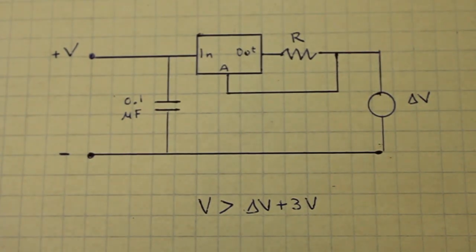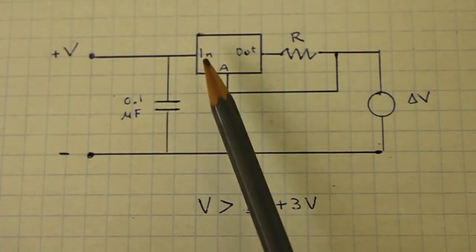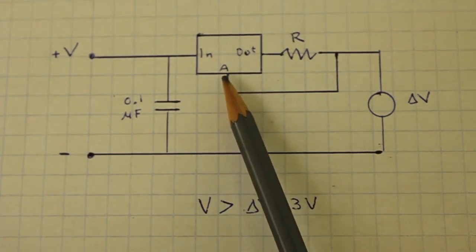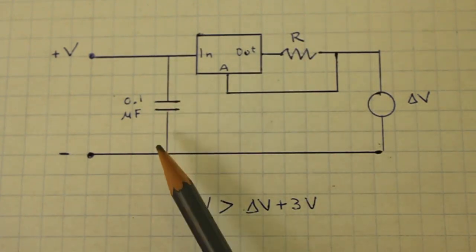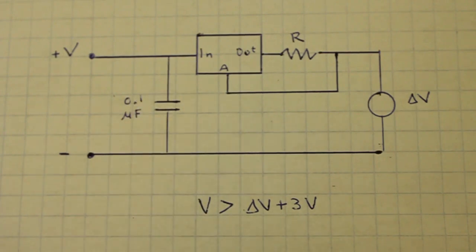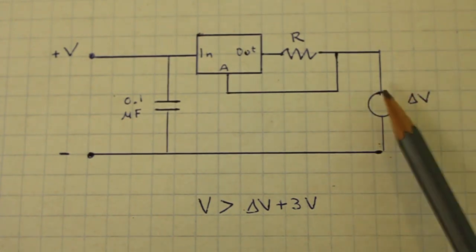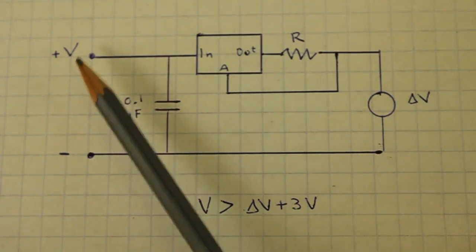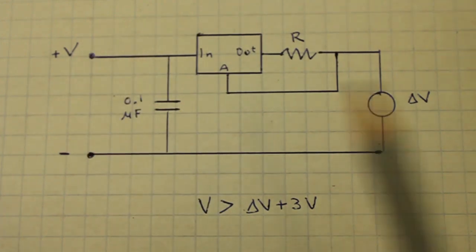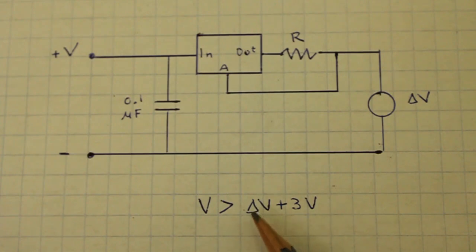This is the way in which we connect the LM317AC as a constant current source. We have the input, output and adjust pins. We put here a resistor at the output, a capacitor of 0.1 microfarad between positive and negative of the input voltage and here is our load. Our load will have a voltage drop of delta V and the input voltage here, which is DC, must be 3 volts larger than the voltage drop of the load.